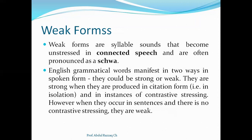English grammatical words manifest in two ways in spoken form — they could be strong or weak. They are strong when they are produced in citation form, that is, when they are spoken in isolation. They are also strong in instances of contrastive stressing, where we stress and focus on certain things because they are important.